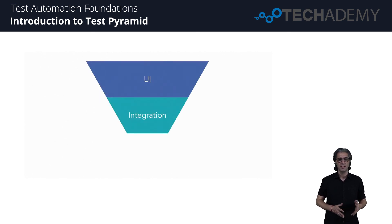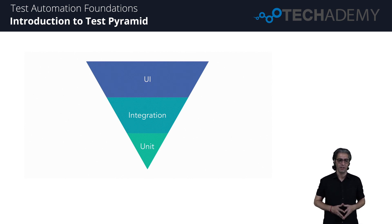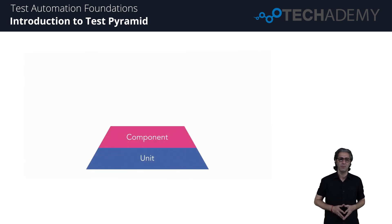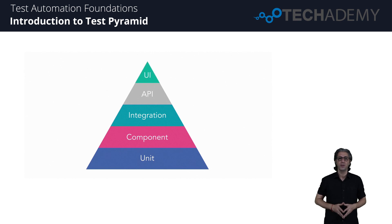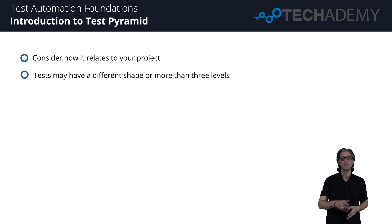Conversely, if a project has a large number of UI tests but minimal integration and unit tests, the shape becomes an inverse pyramid. In this case, tests have slow execution times and are a pain to maintain. There are many more shapes that can manifest based on the amount and level of tests implemented. Be sure to consider the pros and cons of each shape. The Test Pyramid can include many other types of tests beyond three levels — think about what it should look like for your project.